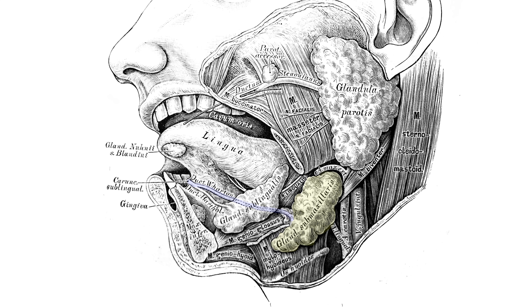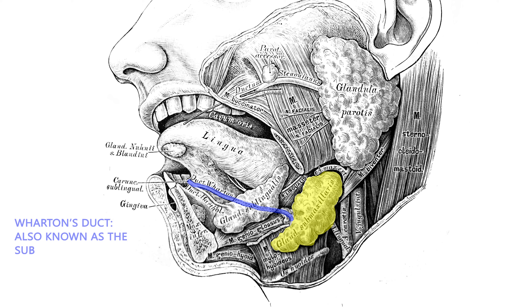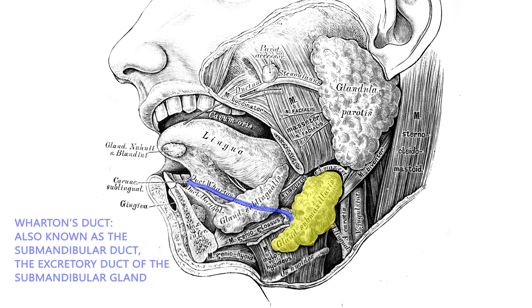This sialolith forms due to mineral deposits that accumulate in the duct that empties the submandibular gland. The saliva has a mineral component, and when stasis causes some of these minerals to congeal, there is a snowball effect and the stone keeps growing with time. Patients who have a dry mouth and low salivary flow are more likely to develop sialoliths. Wharton's duct is a common location for sialoliths because the duct is long and it travels superiorly.